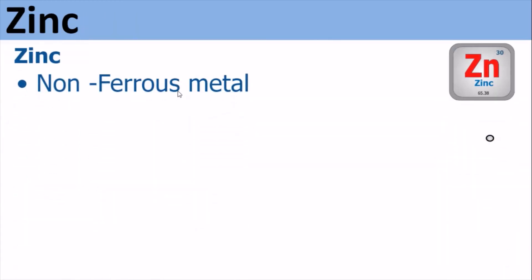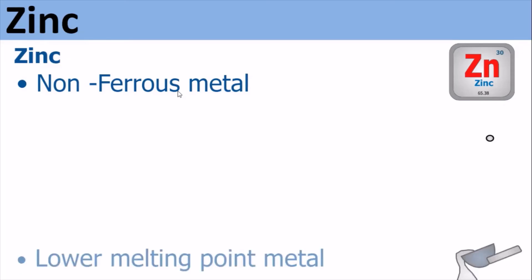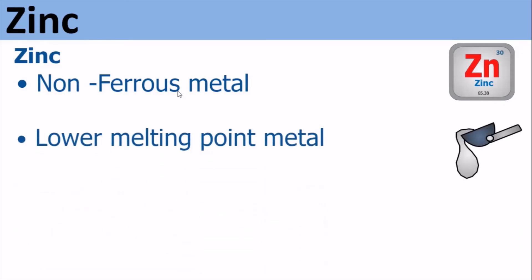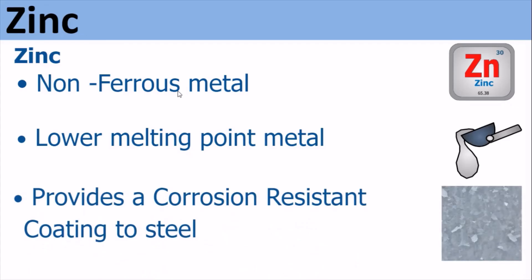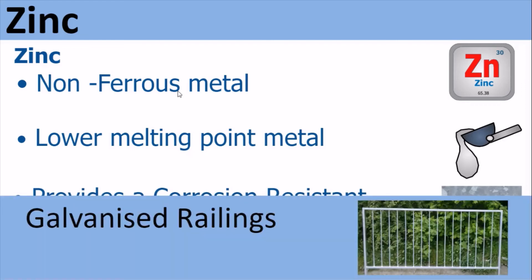Zinc. Zinc is a non-ferrous metal with a lower melting point. It provides a corrosion resistant coating to steel because it is less reactive. So it is used for coating steel items like railings, and this is called galvanizing. You can see some galvanized railings there.